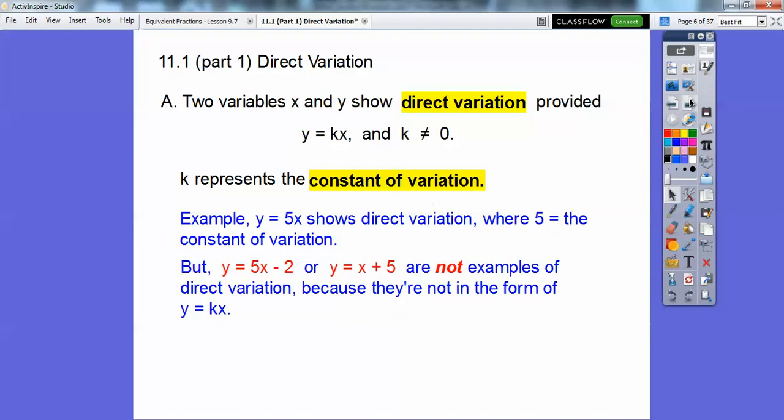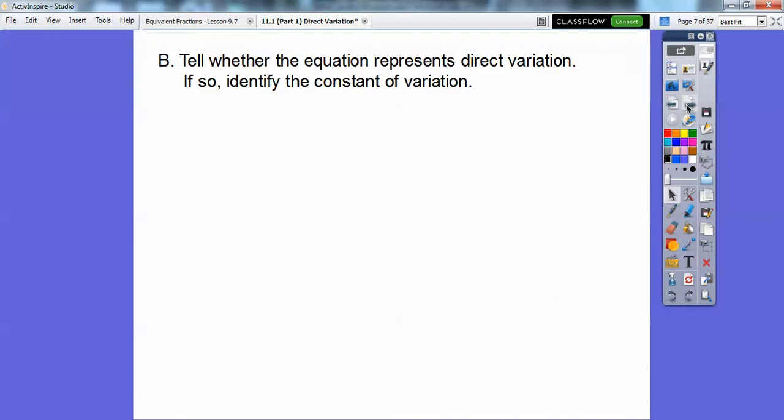So example, y equals 5x shows a direct variation where 5 is the constant of variation because here's 5. 5 is this k, and k is the constant of variation. This is an easy lesson. But these two equations, y equals 5x minus 2, or y equals x plus 5, they're not examples of direct variation because they're not in the form of y equals kx. They're in the form of y equals mx plus b. They have that b on there, so you can't have the b on there. That's just a definition of direct variation.